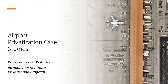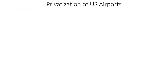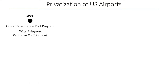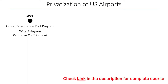The move towards airport privatization in the United States started when Congress launched the Airport Privatization Pilot Program in 1996. The program was termed a pilot program because a maximum of five airports were permitted to enter the program, as the US government first wanted to test the idea before implementing it nationwide.